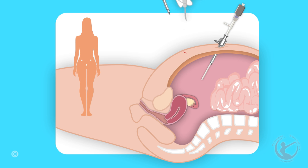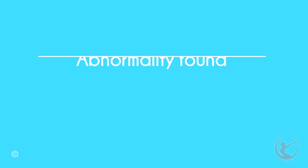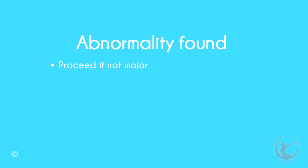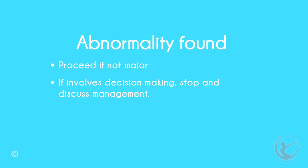One, two or three further small cuts are made in your abdomen to allow instruments into the abdomen. If nothing untoward is found, no further procedure is undertaken. If any abnormality is found and does not involve removing any organs, I will continue with the procedure laparoscopically. If the treatment involves removal of an organ, we will stop at that stage and perform the operation at a later date, unless of course something life threatening is found which must be treated immediately.